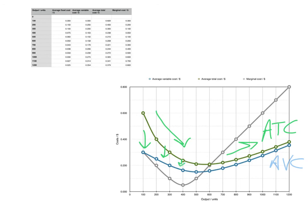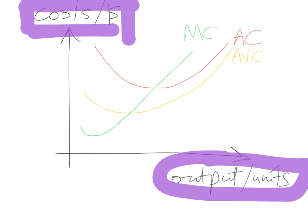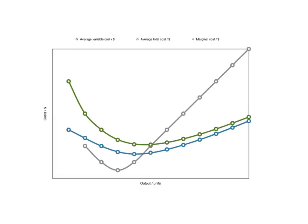Marginal cost is the grey curve, and it looks like a tick — first decreasing, then increasing. These three curves show the relationship between costs on the vertical axis and output on the horizontal axis. Marginal cost looks like a tick. Average total cost is the green curve. Average variable cost is the blue curve. The vertical distance between average total cost and average variable cost gives us the average fixed cost.